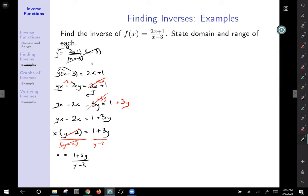Now we need to reverse the... switch the variables and label our inverse. So y is equal to f inverse of x. And where there was y, I will now put x is 1 plus 3x over x minus 2.